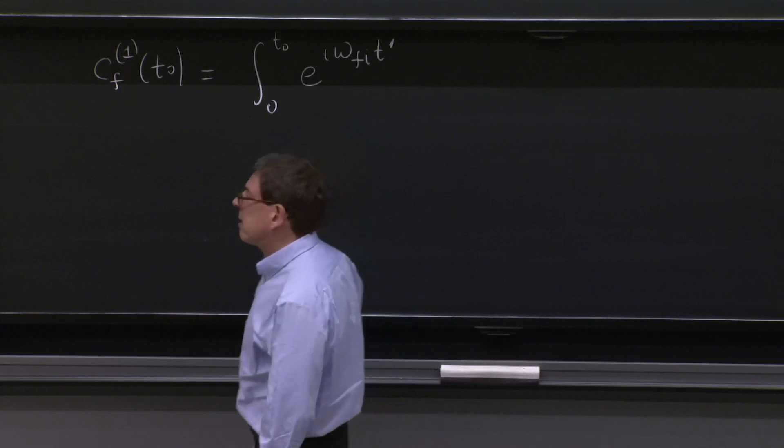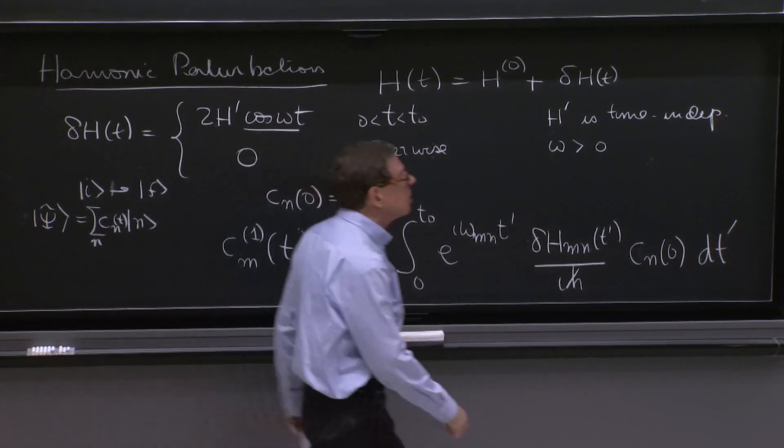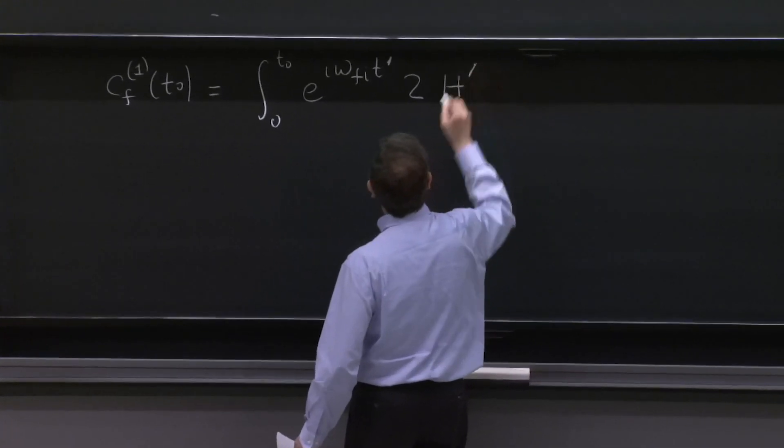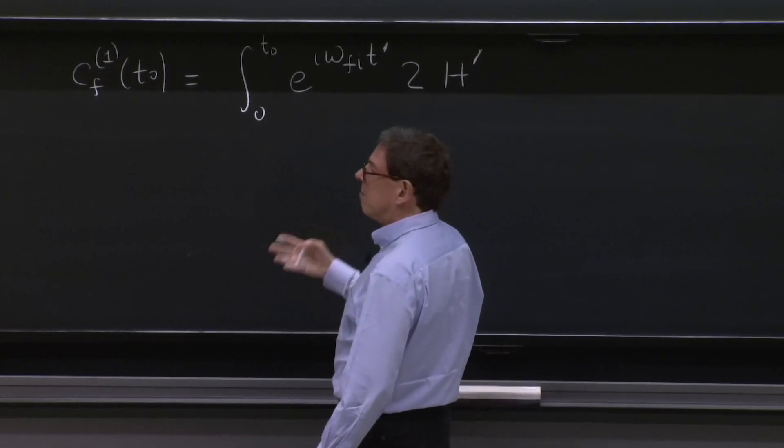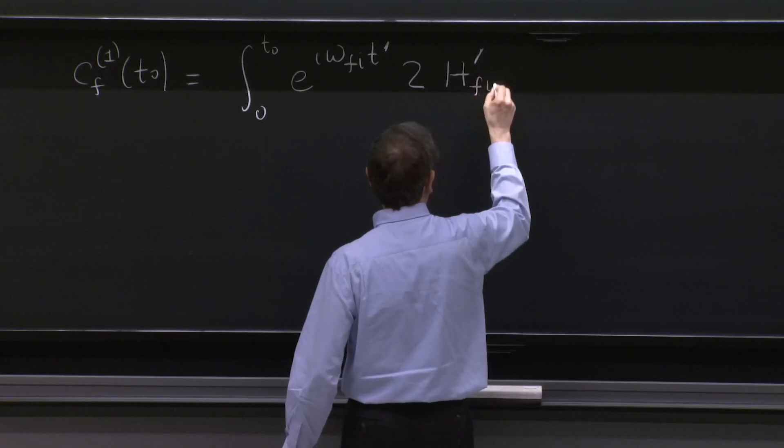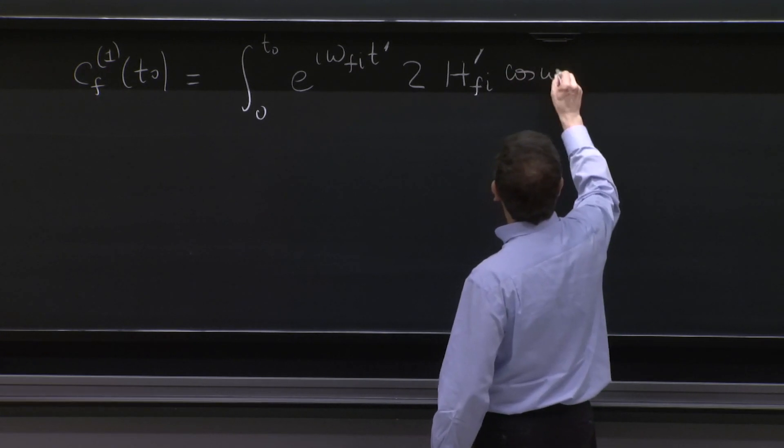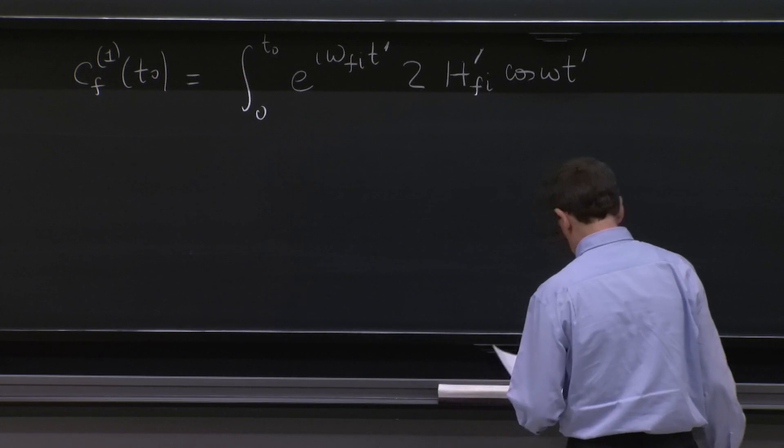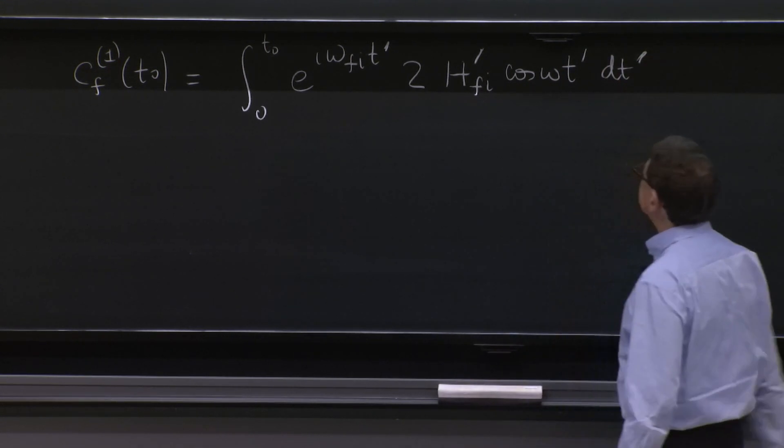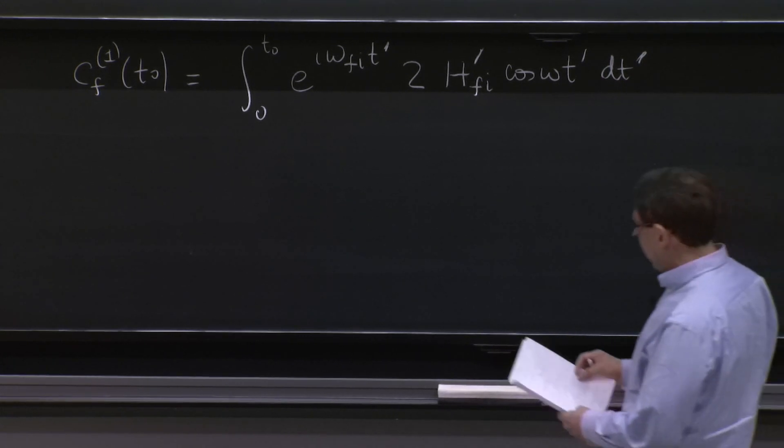And now the delta h. The delta h is this whole quantity. So we have to substitute it. So 2 h prime is the only part that has matrix elements. The cosine omega t is just a function. So it's h prime fi cosine omega t prime and dt prime.